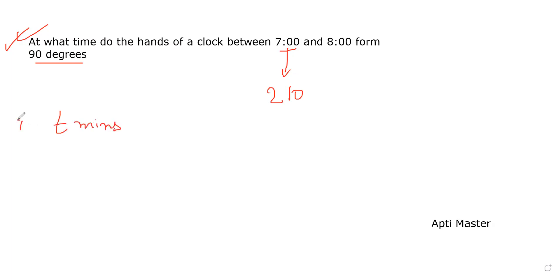In t minutes, the hour hand will be at 210 plus 0.5t, and the minute hand will be at 6t.